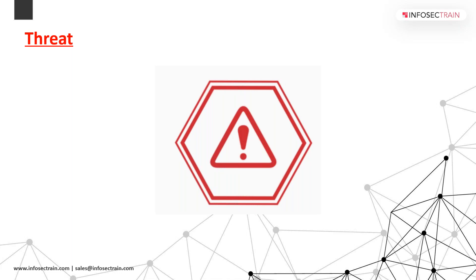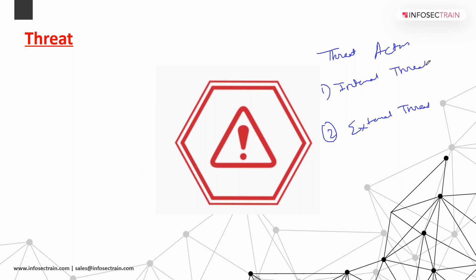A threat comes with two things: internal and external. Internal threats are those who have more permission to the system — for example, an employee who is not happy with their manager. Not being promoted for four to five years, having the most privileges and access to all systems and domains, they can leak information — acting as an internal threat with most privileges.